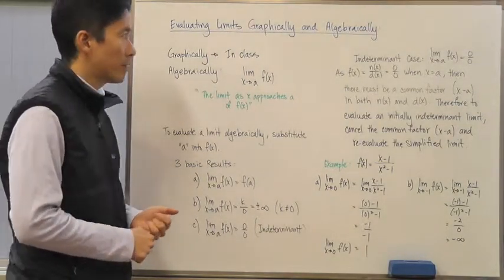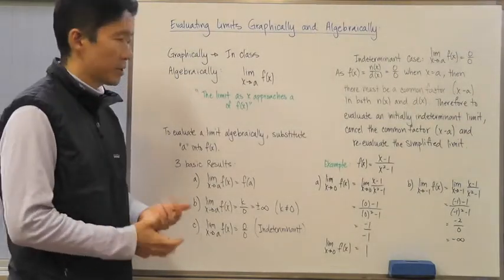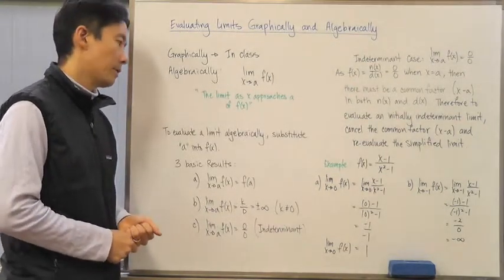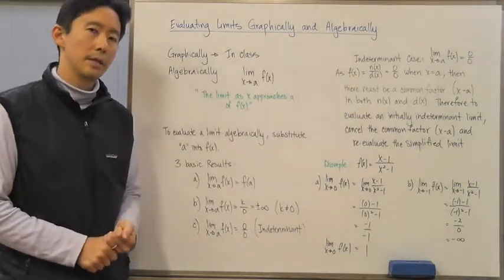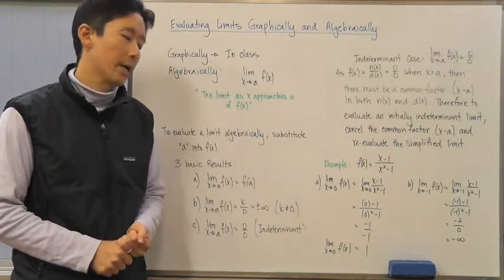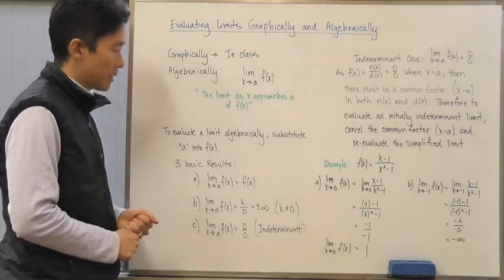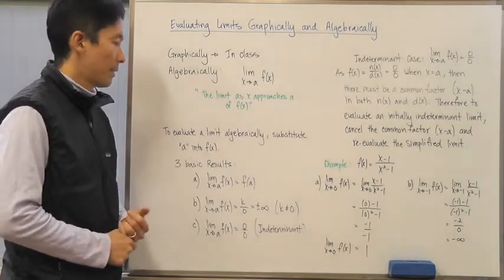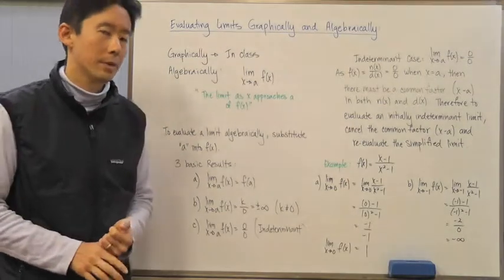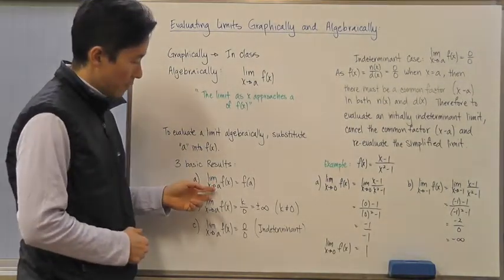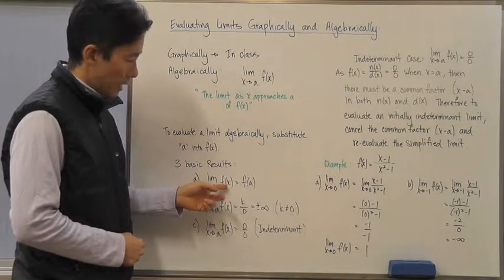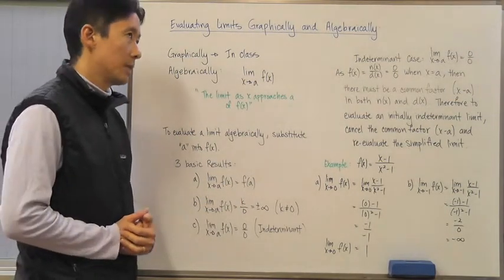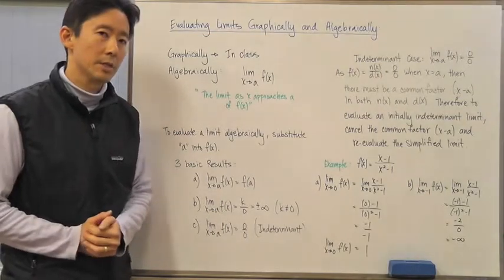We have an idea of what's happening graphically and we want to verify that information algebraically — there should be consistency. Basically, evaluating a limit algebraically comes down to substituting a for x into f of x. If you substitute that value into f of x, one possible result is a real number, f of a.